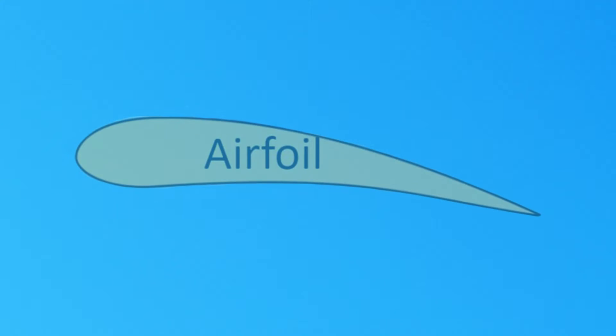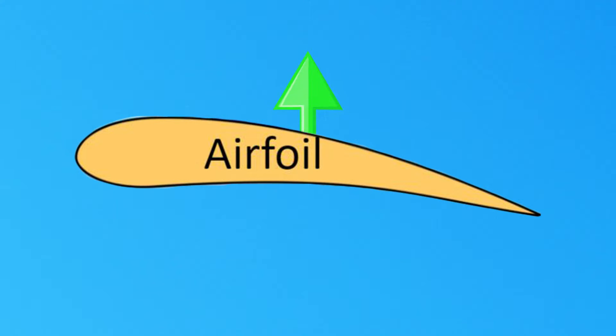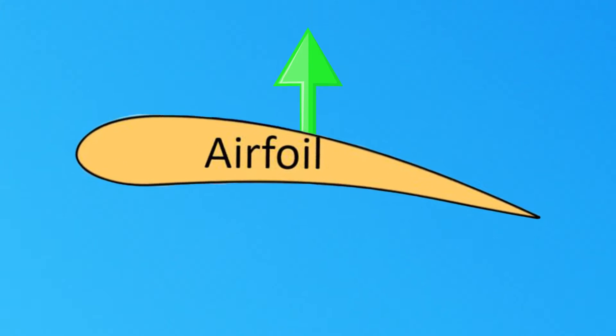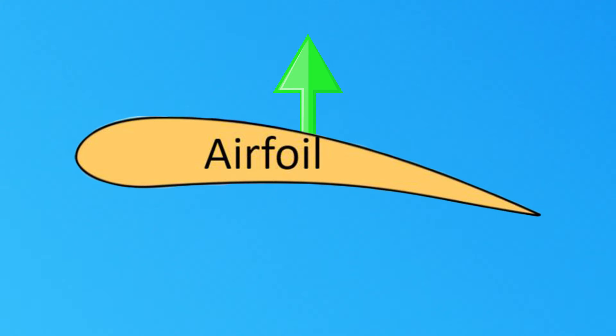Before learning how to conduct power-on stalls, let's first examine what a stall is. The definition of a stall is when an airfoil's critical angle of attack is exceeded. An airplane generates lift with its airfoils, and the pilot increases and decreases the airfoil's angle of attack to climb, descend, or remain in level flight.